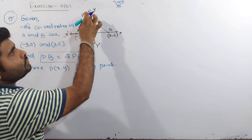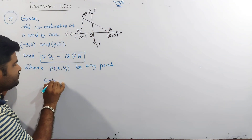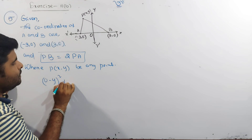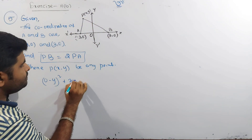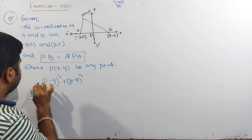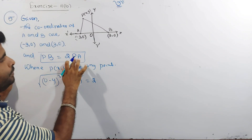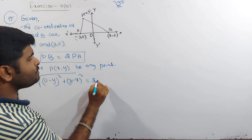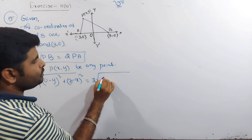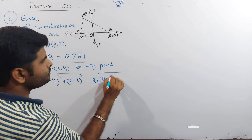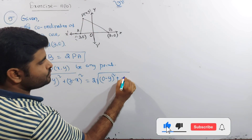Using the distance formula: √[(x − (−3))² + y²] = 2 × √[(x − 3)² + y²]. Squaring both sides: (x + 3)² + y² = 4[(x − 3)² + y²].